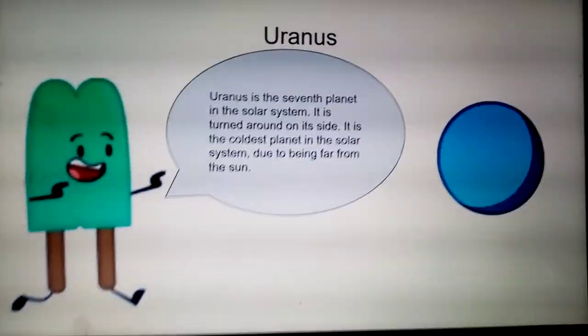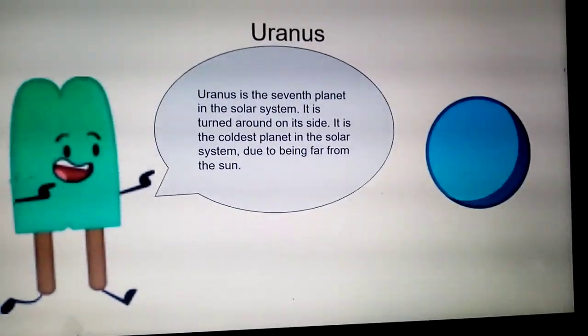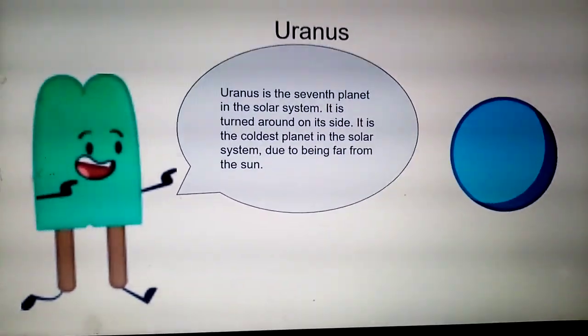Uranus is the sixth planet of the solar system. It is turned around on its side. It is the coolest planet in the solar system due to being far from the sun.